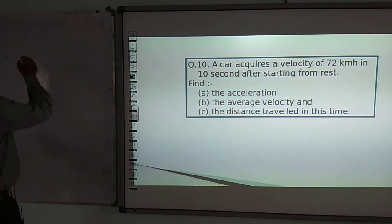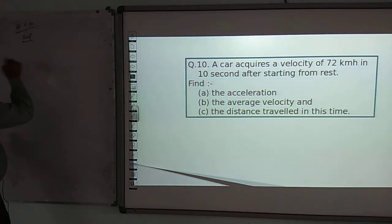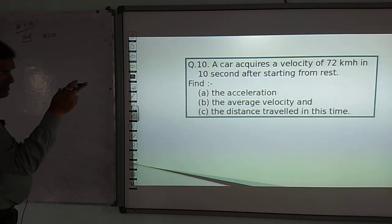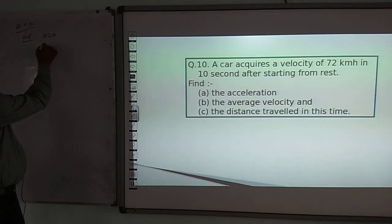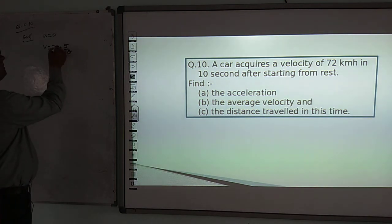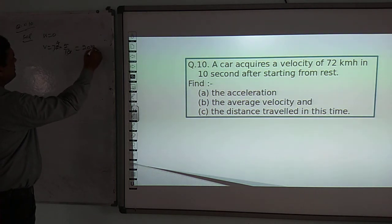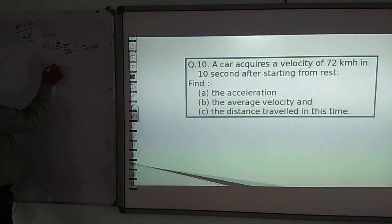For the solution, first of all, u (initial velocity) is equal to 0, because the car is starting from rest. The final velocity v = 72 × 5/18, because we are converting km per hour to metres per second. So v = 20 metres per second. Time t = 10 seconds.